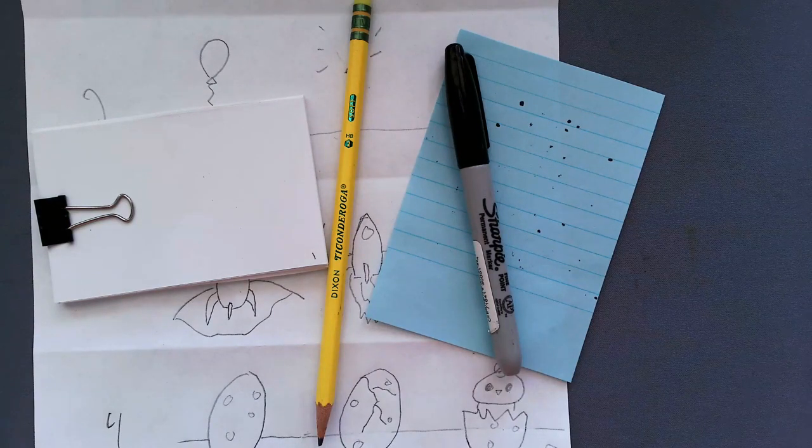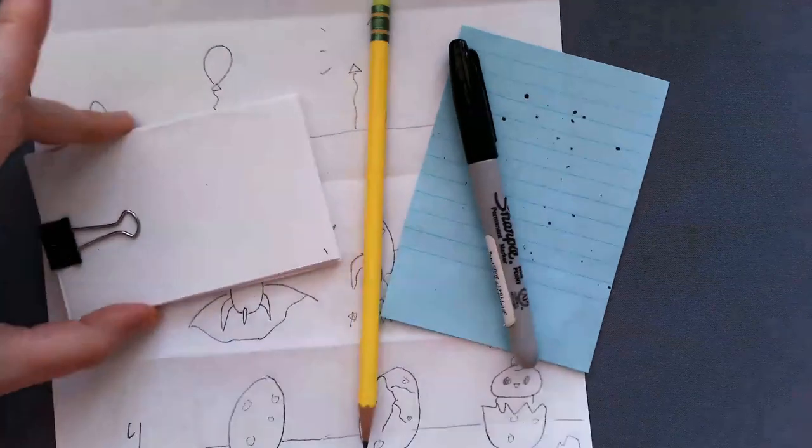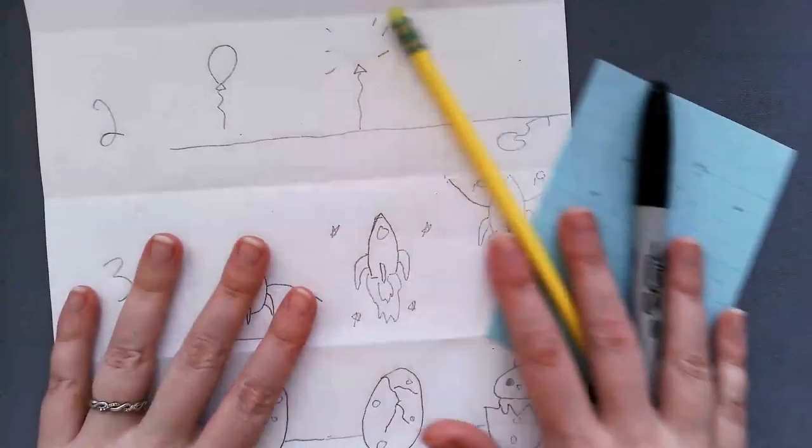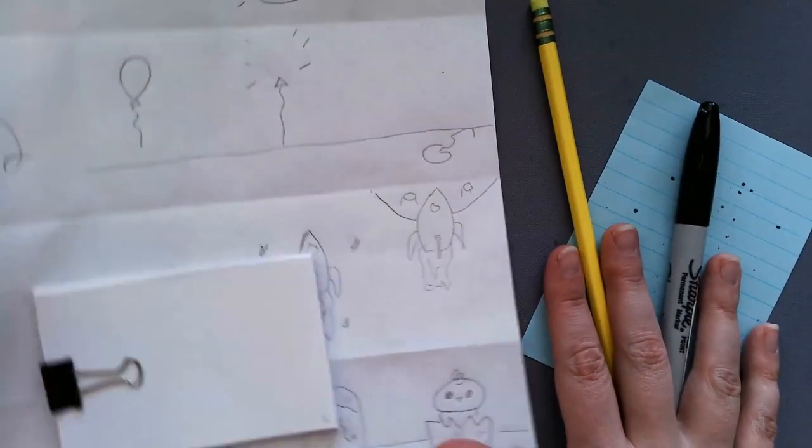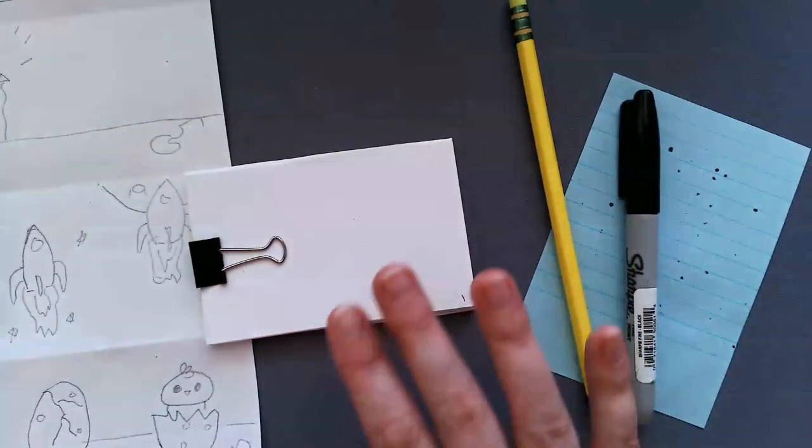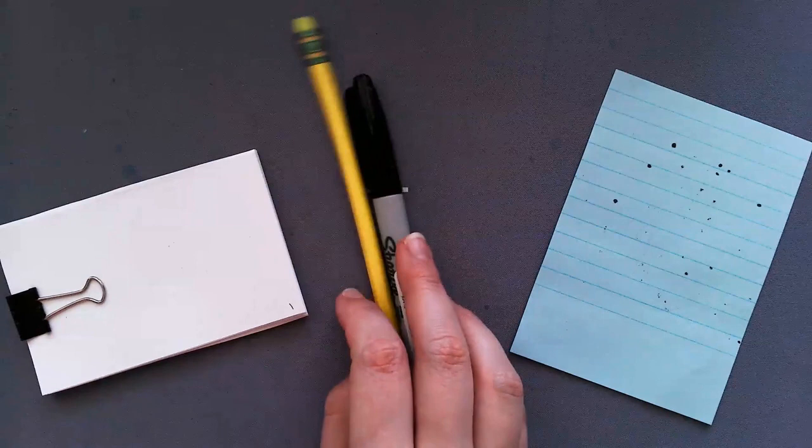Hey guys, today we are going to finish up our flipbooks by adding the animation to it. You'll need your flipbook, your sketches that we did a couple weeks ago, and whatever tools you're going to use to draw your pictures. So I grabbed a pencil and a Sharpie. You can also color your pictures if you'd like to.